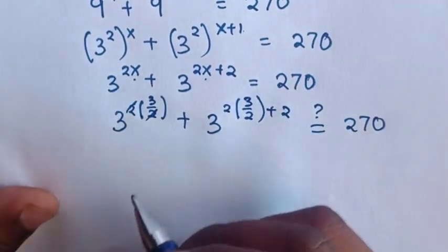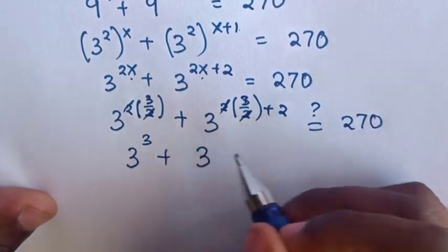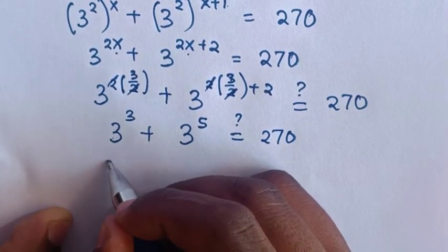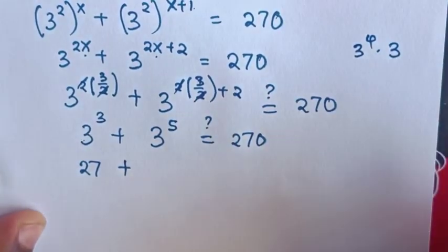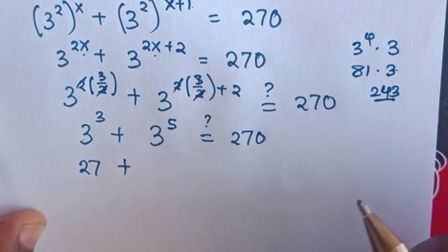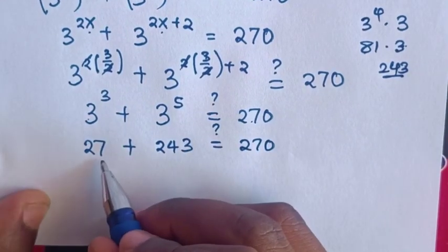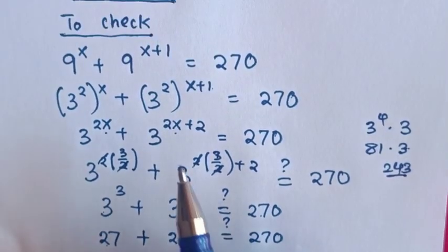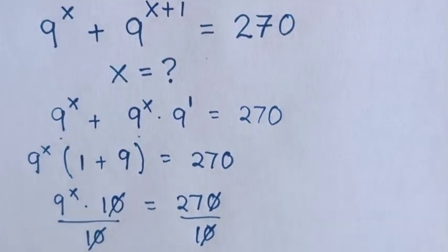Simplifying: the 2s cancel, giving 3 power 3 plus 3 power 3 plus 2, which is 3 power 5. So we have 27 plus 243 equals 270. That gives us 270, which equals 270, so the left side and right side are equal. This proves that x equals 3 over 2 is correct. Thank you for watching, please subscribe to my channel, and see you in the next video. Bye bye.